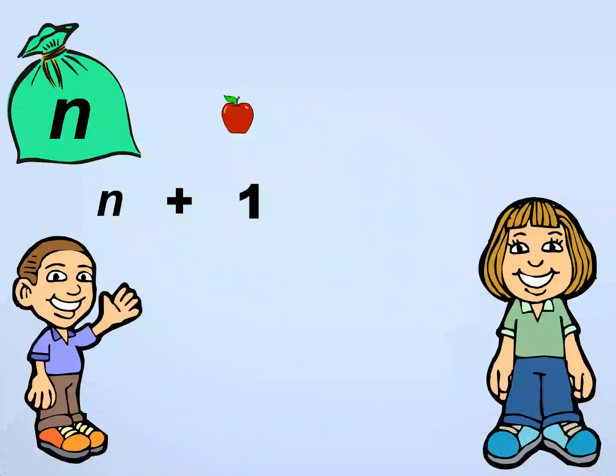Well, we know that the total number of apples is got by adding what David had in his bag at first and the number of apples given to him by Jane. Since the number of apples David had at first has been given as N, we can say that the total number of apples David has now is N plus 1.